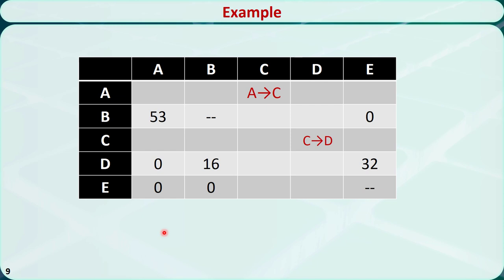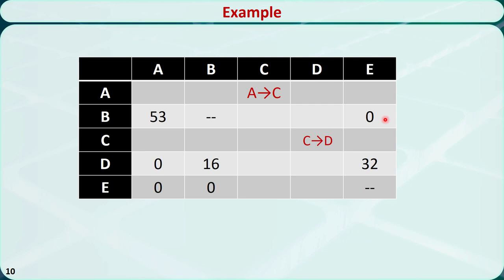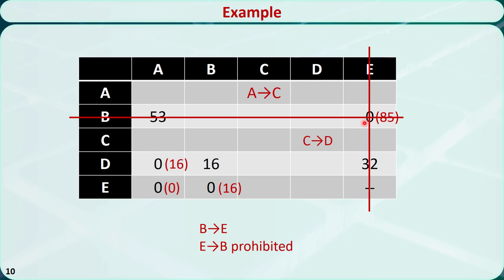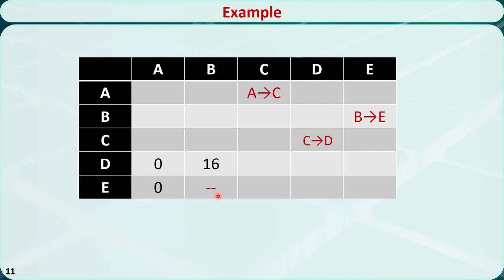Go back to step 1 and repeat the process. Find the minimum value for each row — they are all zeros. Find the minimum value for each column — they are all zeros. For this zero, the minimum value other than itself in this row is 53, and the minimum value other than itself in this column is 32. We add them together, so the penalty is 85. Now let's do this for all other zeros. The largest penalty is associated with this zero, so we need to include an arc from B to E in the tour. Then cross out this row and this column. Because we just traveled from B to E, the reverse arc E to B will not be allowed for further consideration. This is the remaining matrix.